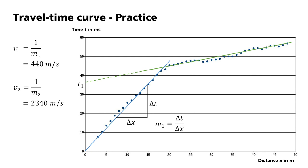t1 is the point of intersection of the extended second straight line with the y-axis. From the geometry of the travel time curve, one can determine that the depth of the layer boundary d equals v1 times t1 divided by 2 times cosine alpha, where alpha is the critical angle of the refraction. In our case, this results in a depth of 8 meters.